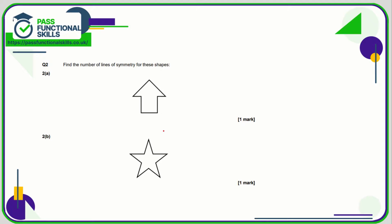Question two: find the number of lines of symmetry. Shape a has only one line of symmetry going down the middle. Shape b has one line here, one line here, another one there — so that's three, four, five lines of symmetry in total.